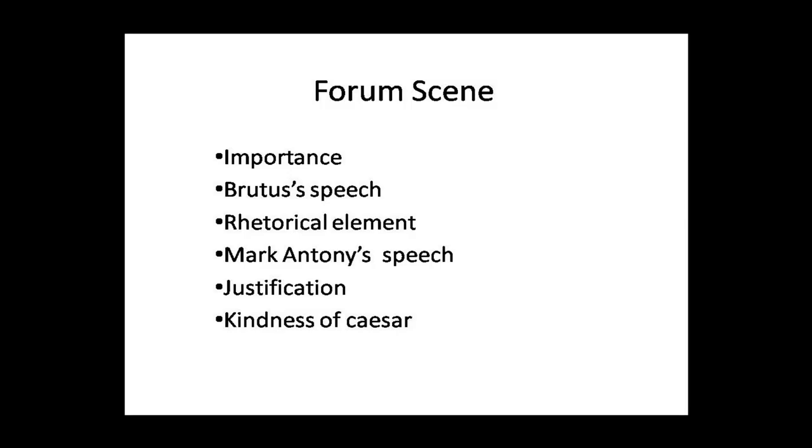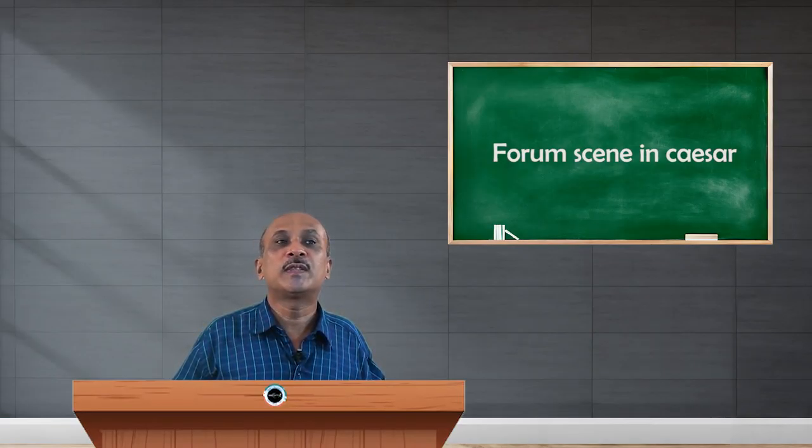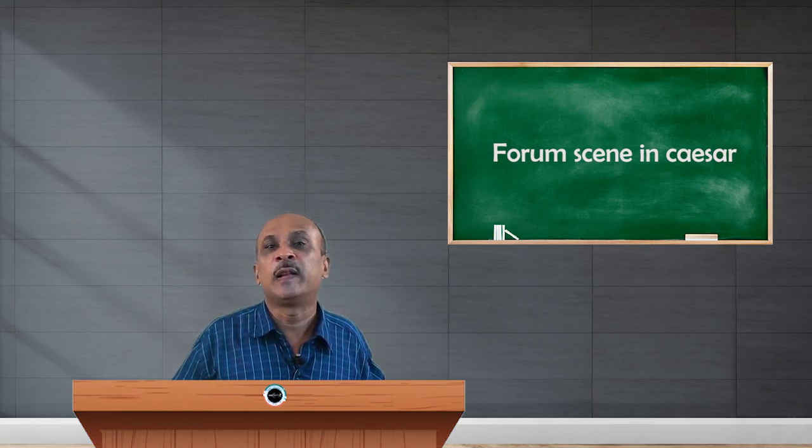When Brutus appears on stage, people were very curious to know what is the need of murdering Julius Caesar. And as a systematic way and his skilled oratorial speech, Brutus begins addressing the people as Romans, countrymen, and lovers.